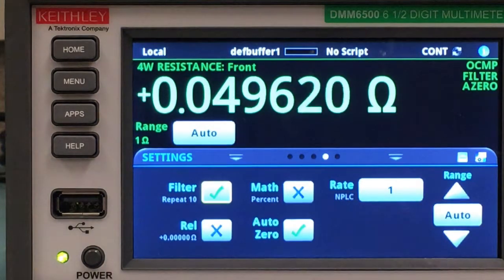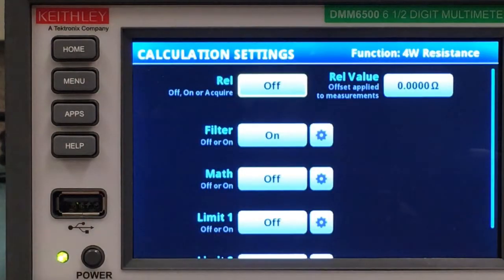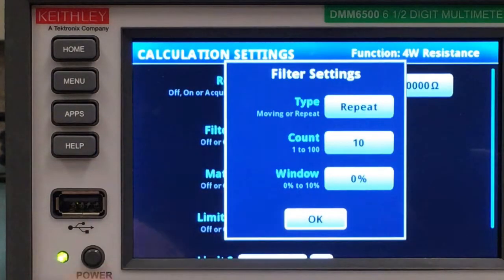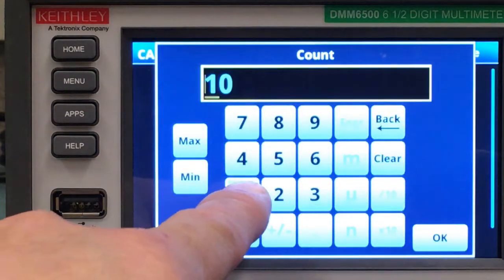I want to smooth that out a little bit more, so I go to Menu, Calculations. Let's adjust my filter, and I want to make it a moving filter with a count of 100.